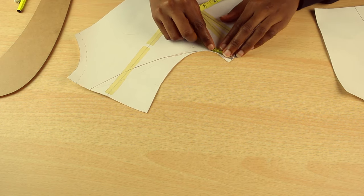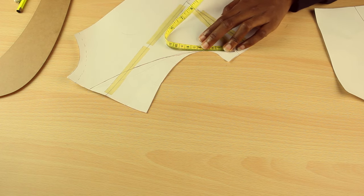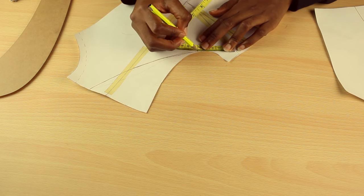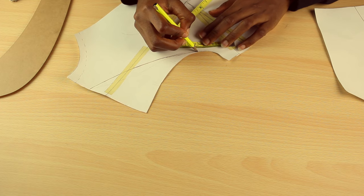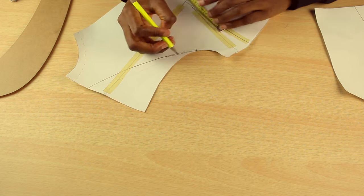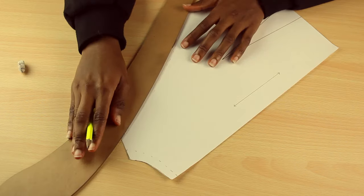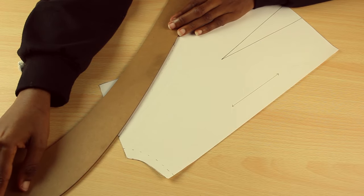Now I'm measuring the distance from my side seam and that is 6 cm. So you want to record that because we're going to translate it into the back bodice and into the sleeve as well.